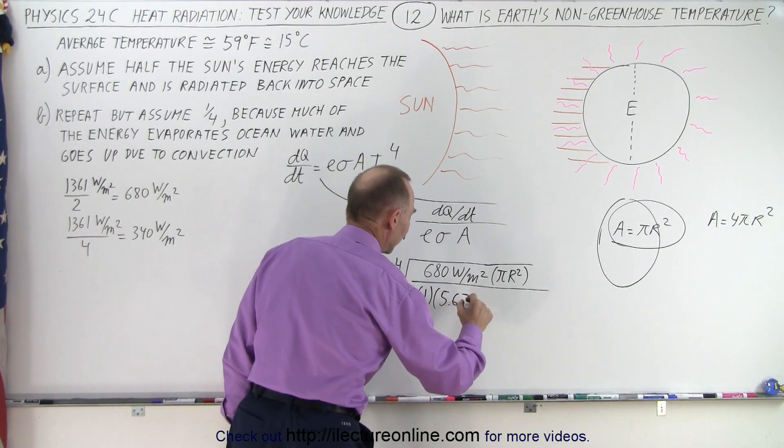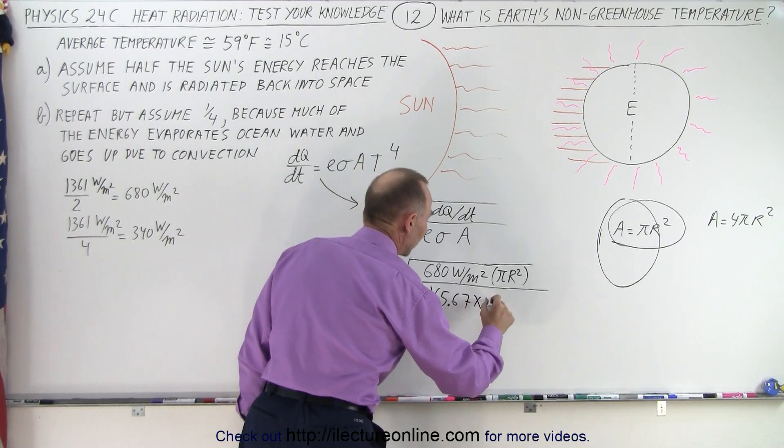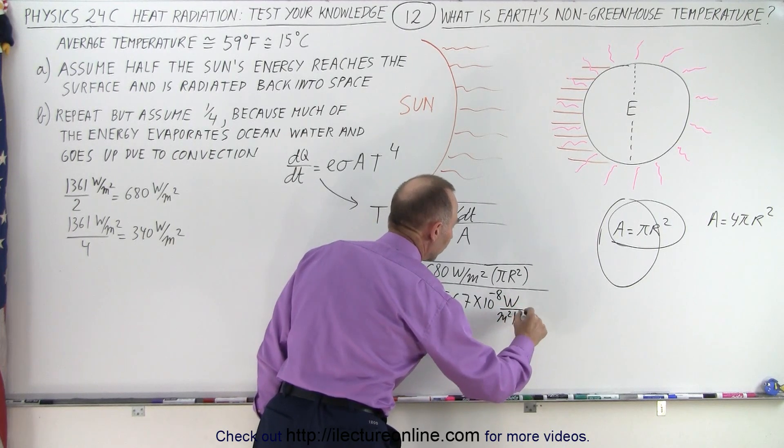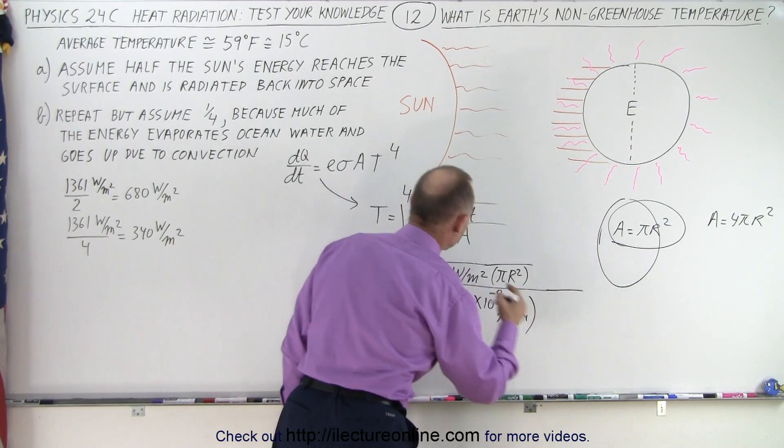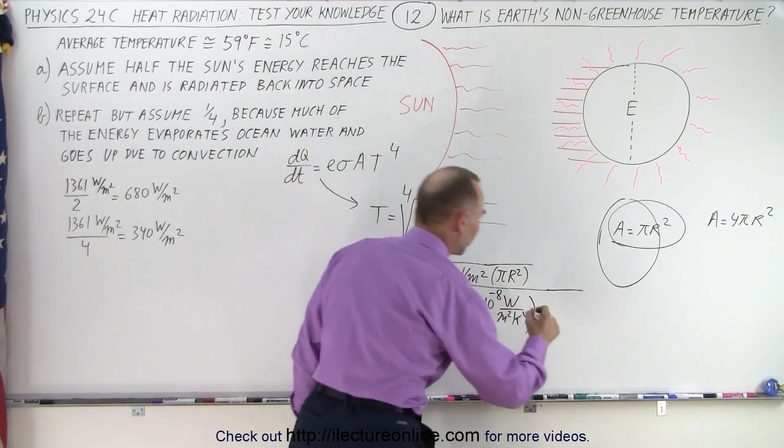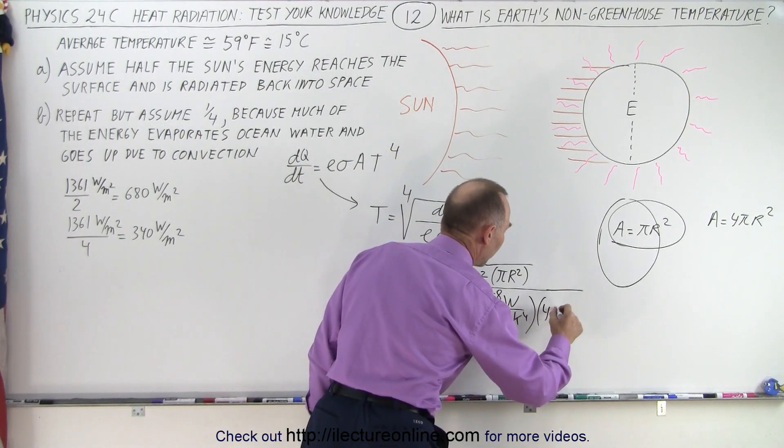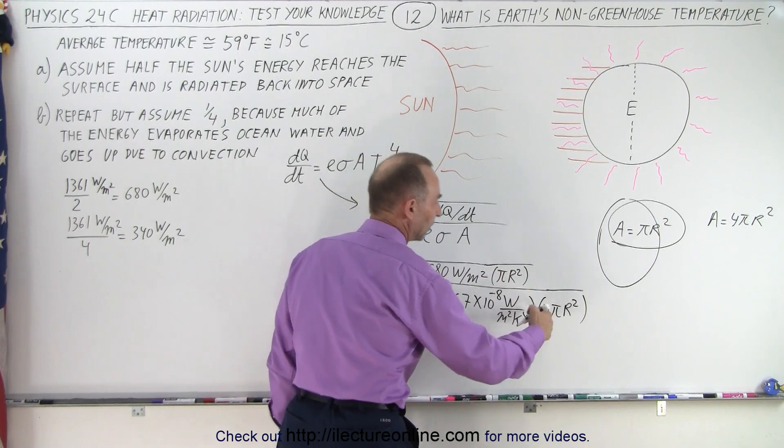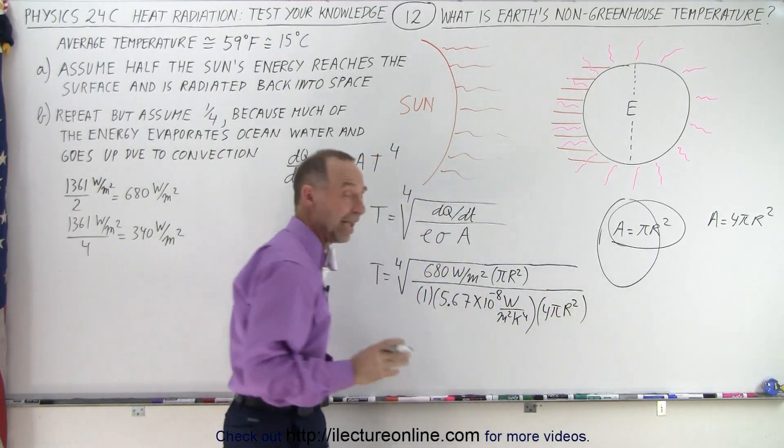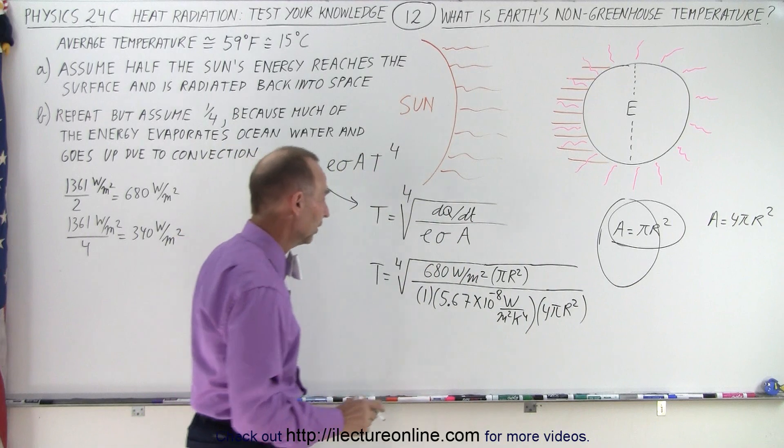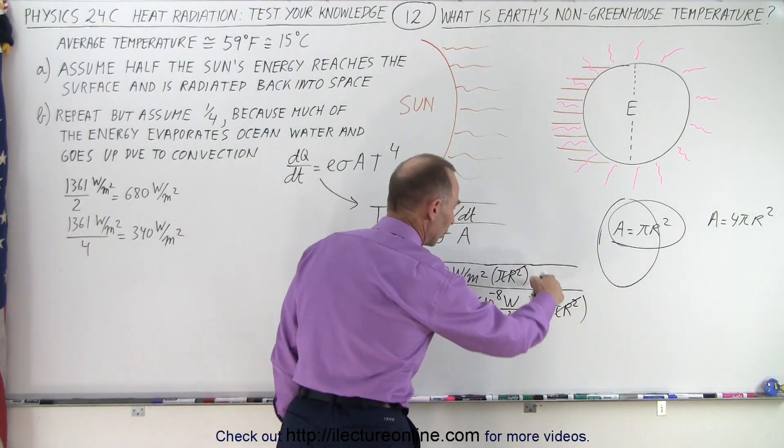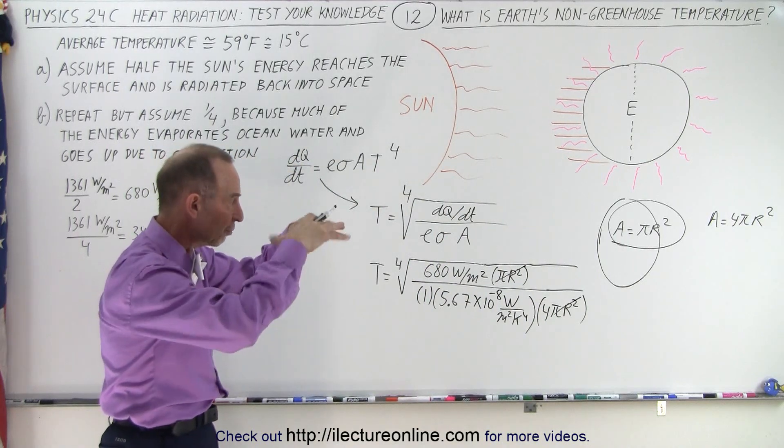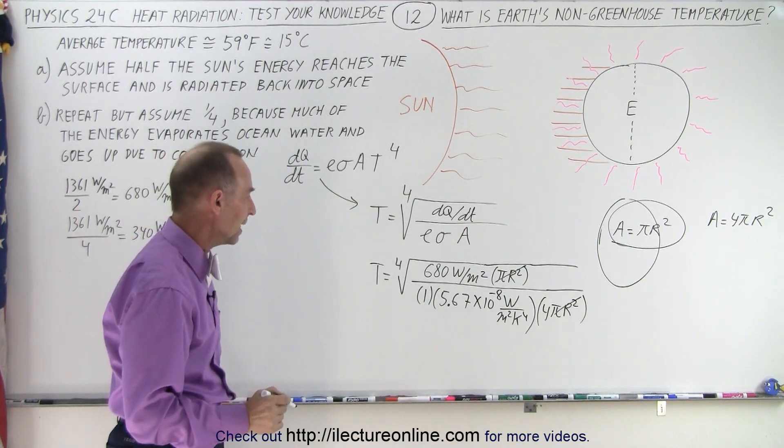Sigma is 5.67 times 10 to the minus 8. That would be watts per square meter Kelvin to the fourth power and then the area of the earth that would be then of course equal to 4πr². And since we're using πr² in the numerator and πr² in the denominator we don't actually have to know the radius of the earth that then cancels out. And we have 1 over 4 for that equivalence of surface area of incoming radiation versus outgoing radiation.